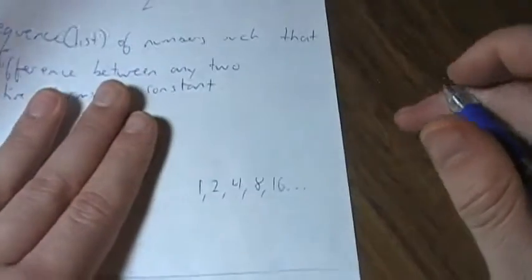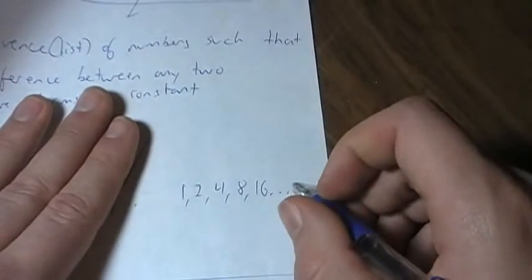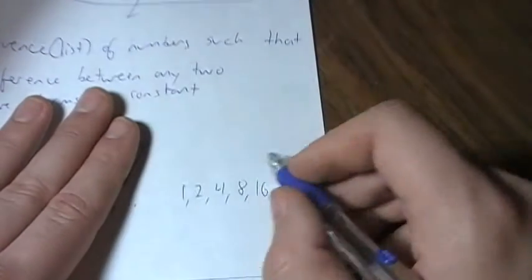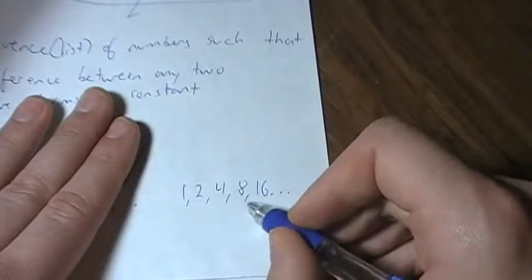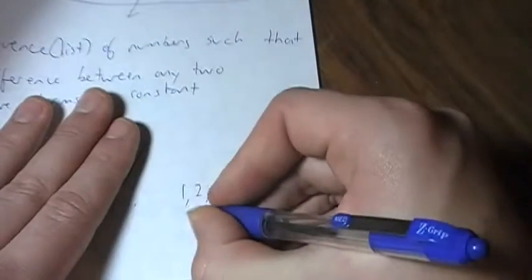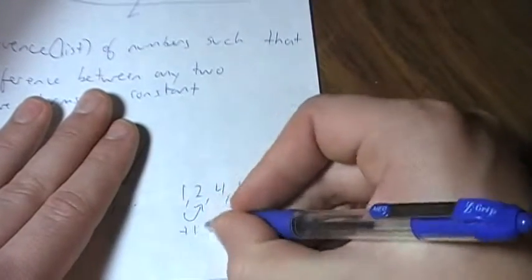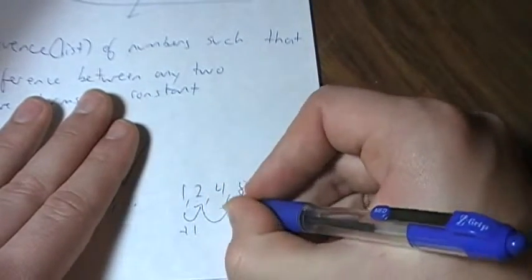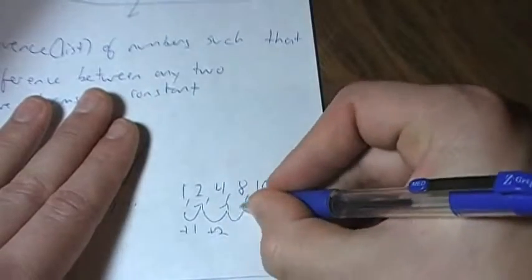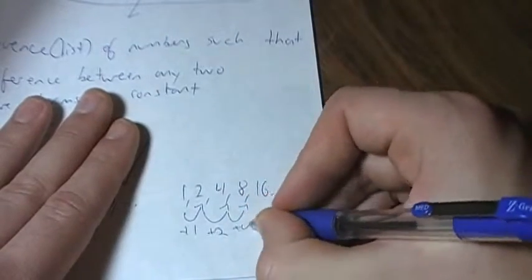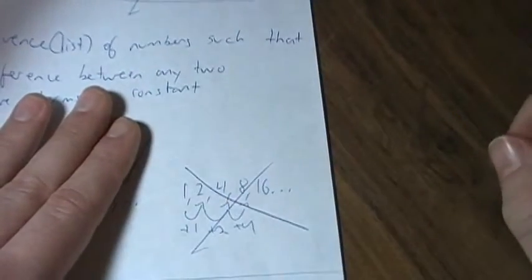This one is not. This is actually called the geometric sequence because you're multiplying each time. You're multiplying by 2, but the difference is not constant. The factor is, but the difference isn't. So that means this is not an arithmetic sequence.